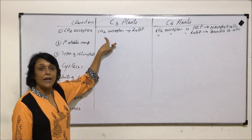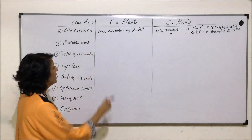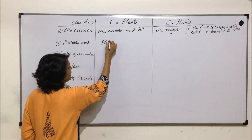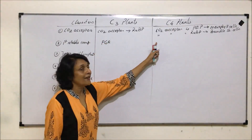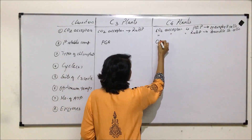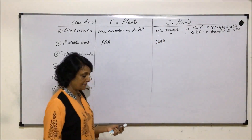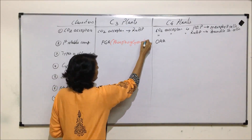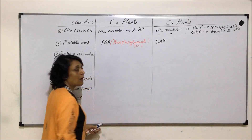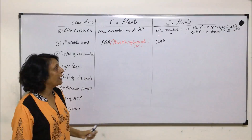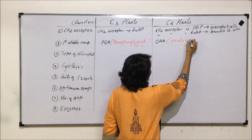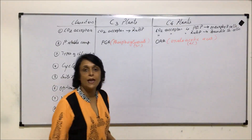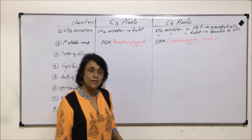The first stable compound in C3 plants is phosphoglycerate, or phosphoglyceric acid, which is a three-carbon compound — and that gives the name to the cycle and the plants. In C4 plants, the first stable compound formed is oxaloacetic acid, which is a four-carbon compound, and so the cycle is known as the C4 cycle and the plants are known as C4 plants.